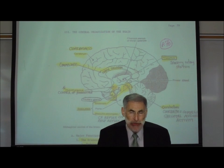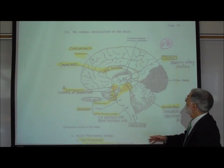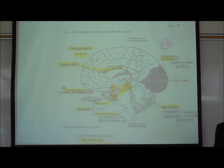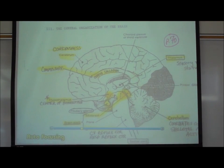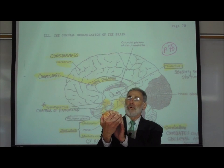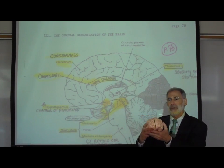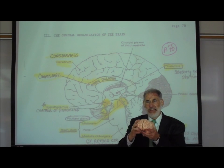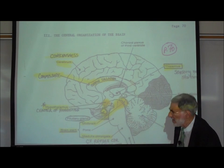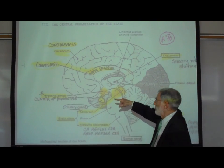What we now want to take a brief look at is the organization of the brain. This is page 70 in the lecture outline. If we were to make a mid-sagittal section right through the middle of the brain, which is what we see in the picture in front of us, first thing I want to draw your attention to is this area called the corpus callosum.